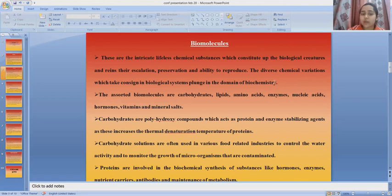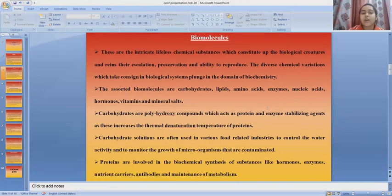The assorted biomolecules are carbohydrates, lipids, amino acids, enzymes, nucleic acids, hormones, vitamins, and minerals. Carbohydrates are polyhydroxy compounds which act as protein and enzyme stabilizing agents as they increase the thermal denaturation temperature of proteins.